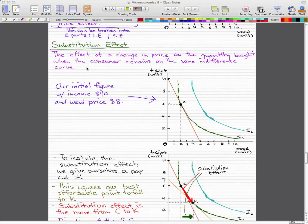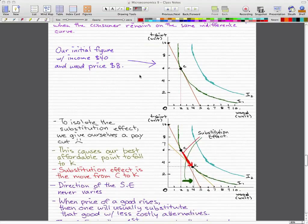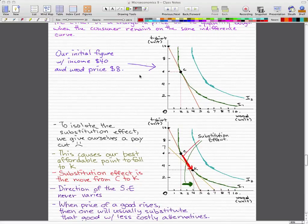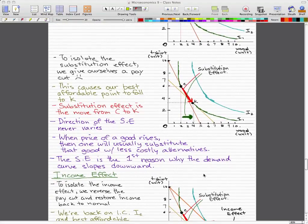That's the definition of a substitution effect: change in price on the quantity bought, and then the customer will remain on the same indifference curve. So that's all you got to remember. Change in price, consumer remains on the same indifference curve. Our price changed but we still remain on the same indifference curve when you move from point C to point K.